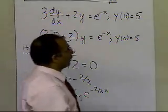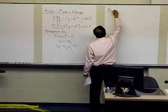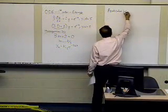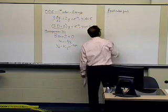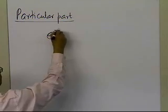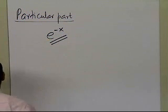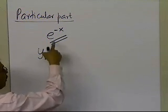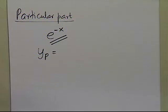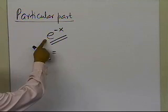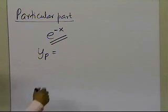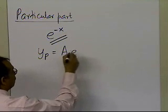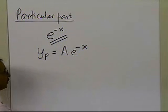Now, in order to find the particular part — how do we find the particular part of the solution? The particular part depends on the right-hand side, or your forcing function. The right-hand side is e to the power minus x. To choose the particular part, we choose the form of the right-hand side and all its possible derivatives. All derivatives of e to the power minus x are e to the power minus x itself, so the particular part will be just a times e to the power minus x.